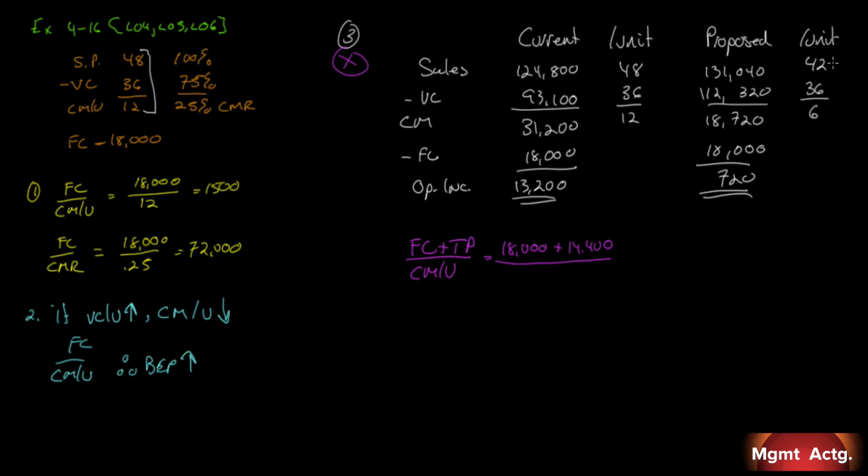So it's $18,000, and what's the target profit we're being asked for? $14,400. And it's at the new selling price of $42, which means our new contribution margin per unit is 6. We're using this number here, not the $12 from the original question. So we divide that by 6. We get to 5,400 tackle boxes.